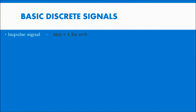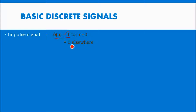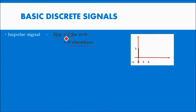As we know the basic discrete signals, I will explain one by one. First is the impulse signal. The delta of n has a value of 1 for n equal to 0, and is 0 everywhere else. So at the 0th place the value is 1, and all remaining values are 0. That is the impulse signal as a basic discrete signal in DSP.